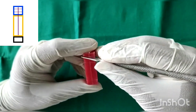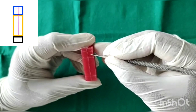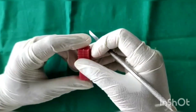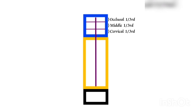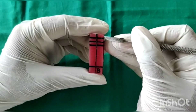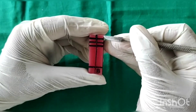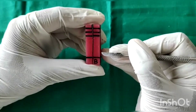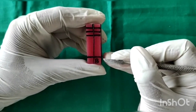Now dividing the crown into three thirds: occlusal third, middle third and cervical third. Repeating this on all the other surfaces.